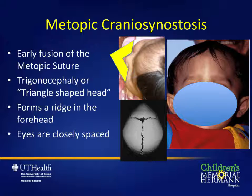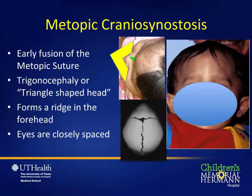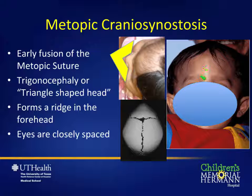First, metopic craniosynostosis involves early fusion of the metopic suture — the one on the forehead. This condition is also called trigonocephaly, or triangle-shaped head. When the metopic suture fuses abnormally, there is a prominent ridge in the forehead, and from the top-down view the head forms a triangle. On CT scan the metopic suture is fused too early while the sagittal and coronal sutures are not. The eyes are closely spaced together and there is a ridge in the forehead.